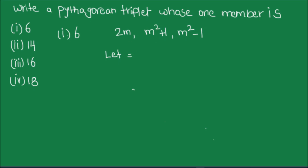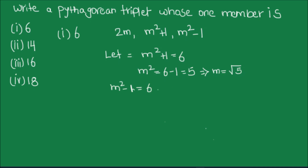We can say that if m²+1 equals 6, then m² equals 6 minus 1 which is 5, giving m equals √5, which is not a positive integer. Similarly, if m²-1 equals 6, then m² equals 7, giving m equals √7, which is also not a positive integer. So we cannot take m²+1 or m²-1 equal to 6.